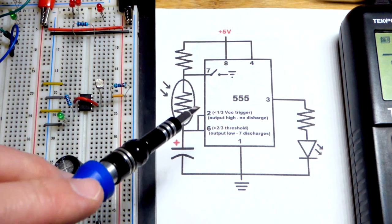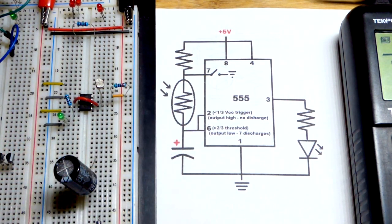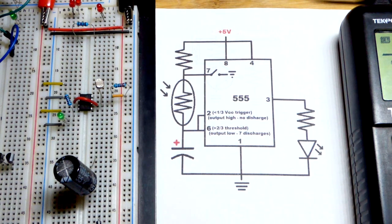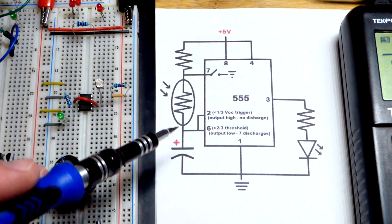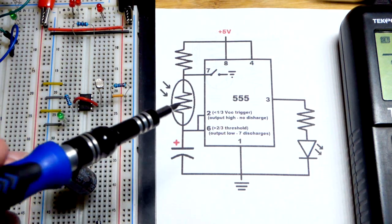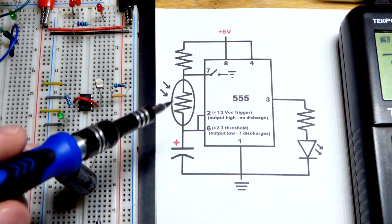So now in this video we're going to make the 555 timer astable mode circuit more interesting. The way we're going to do that is with a light-dependent resistor. Haven't covered this in this video series, but...